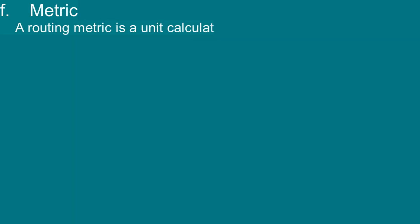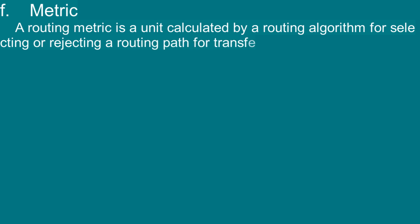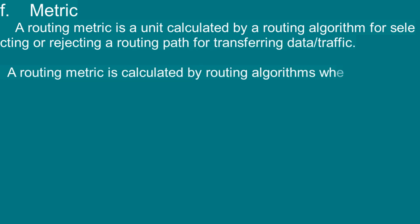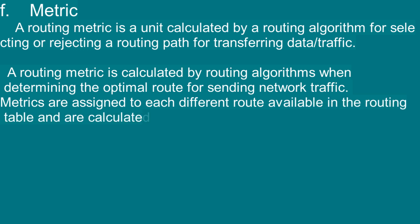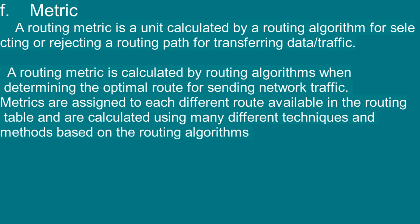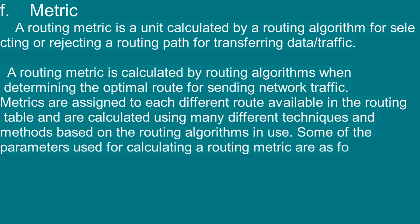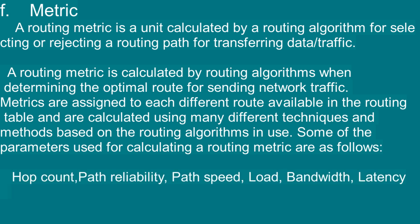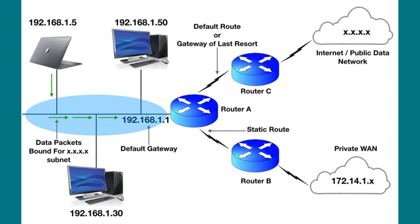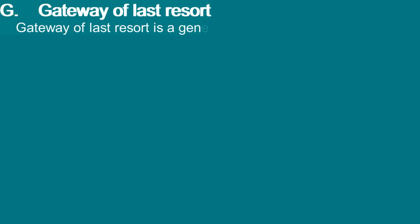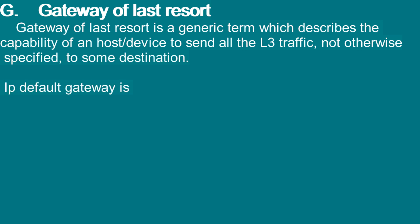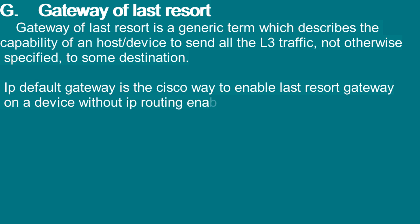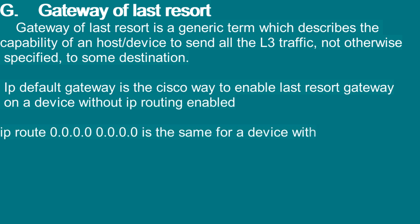F — Metric: A routing metric is a unit calculated by a routing algorithm for selecting or rejecting a routing path for transferring data traffic. Metrics are assigned to each different route available in the routing table and are calculated using many different techniques based on the routing algorithm in use. Parameters used for calculating a routing metric include hop count, path reliability, path speed, load, bandwidth, latency, and maximum transmission unit. G — Gateway of last resort: Gateway of last resort is a generic term describing the capability of a host device to send all traffic not otherwise specified to some destination. IP default gateway is the Cisco way to enable last resort gateway on a device without IP routing enabled; IP route 0.0.0.0 0.0.0.0 is the same for a device with IP routing enabled.